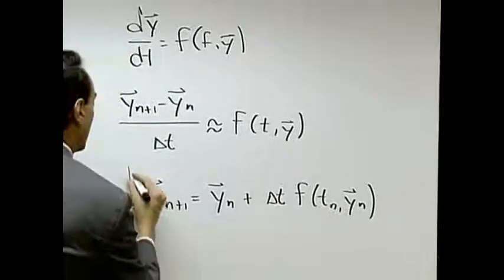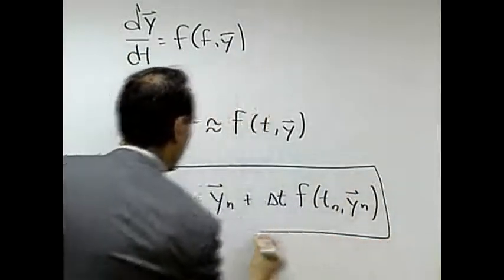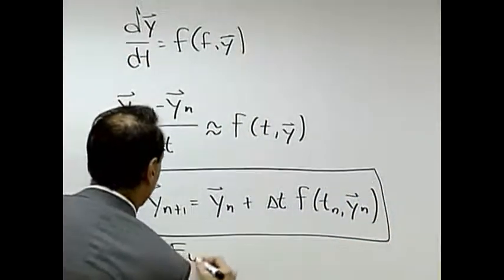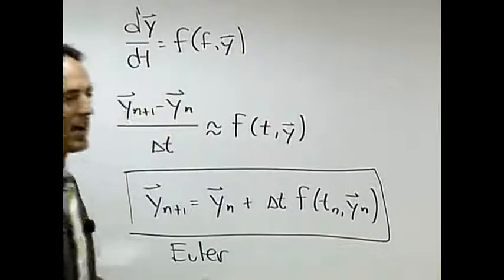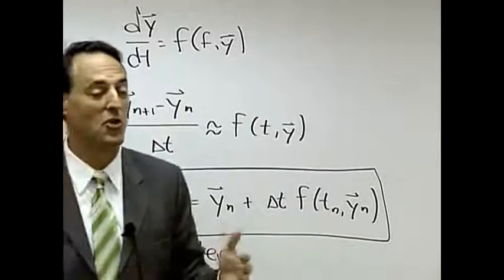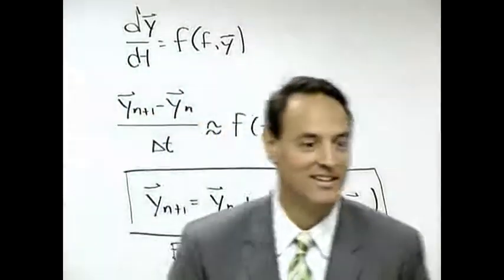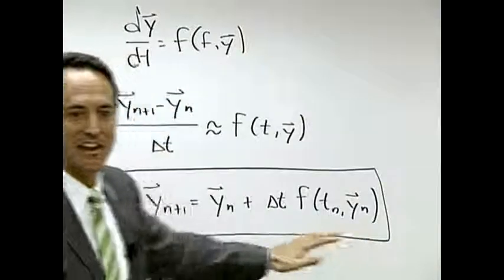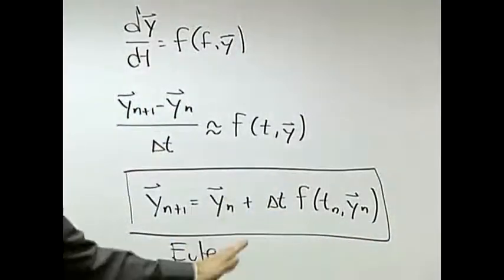And notice what this tells us. This is called the Euler formula. Do you like how I box that? I'm doing that just for the sake of the engineers in the class because they know now it's important because I put a box around it. This is called the Euler formula.